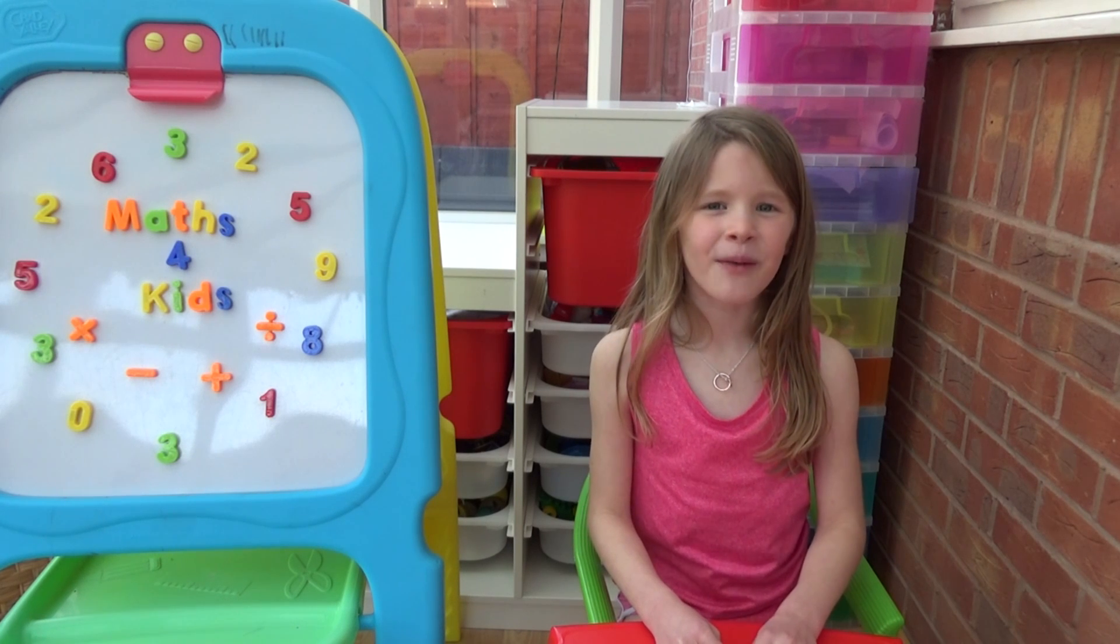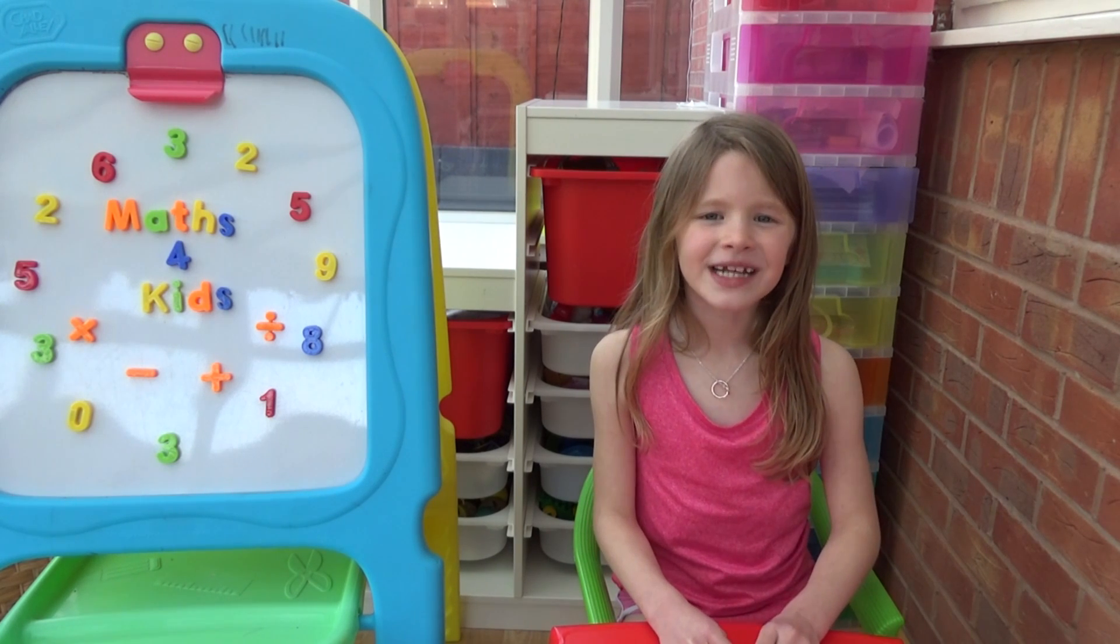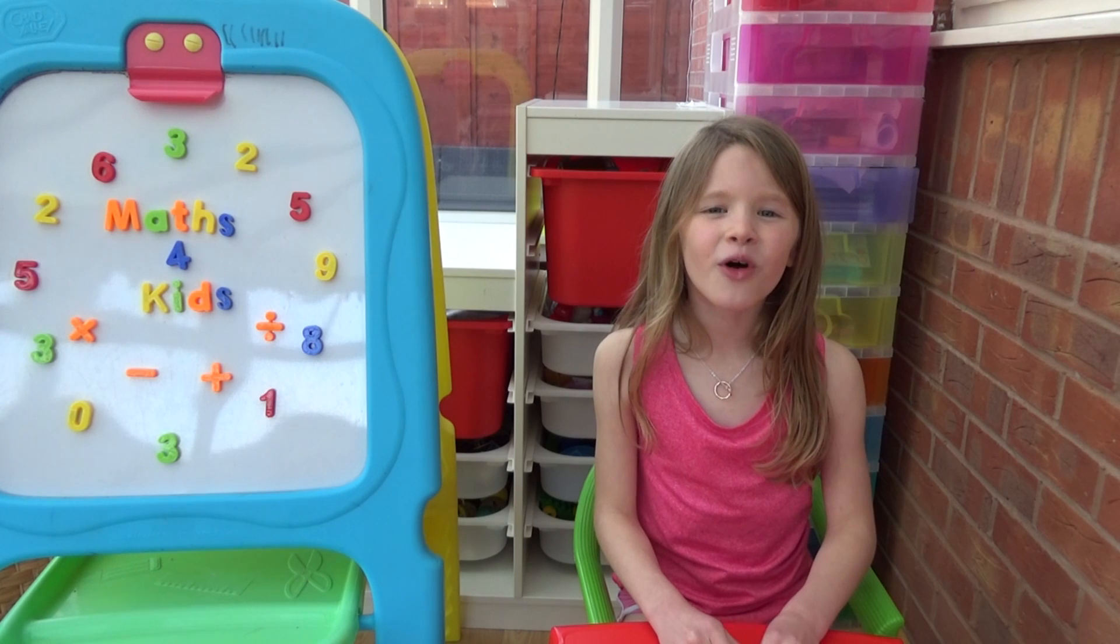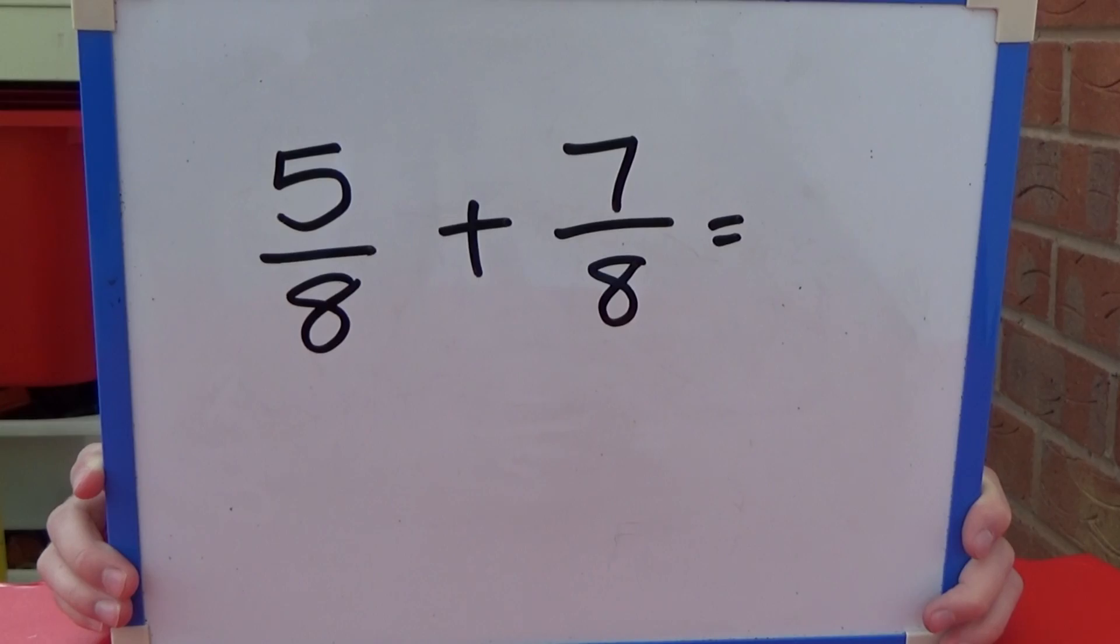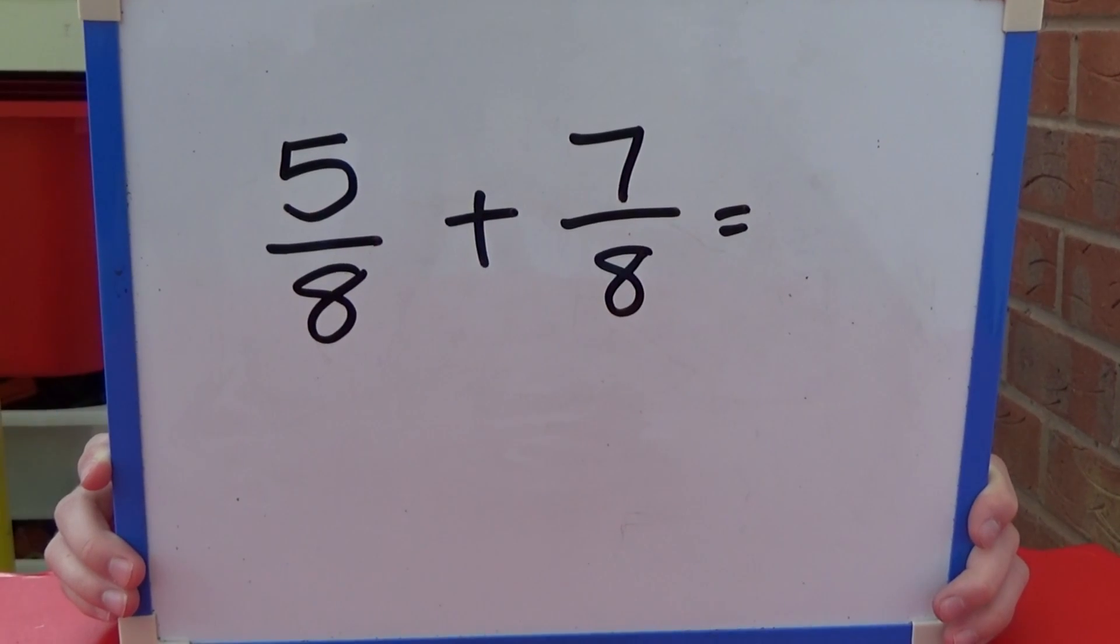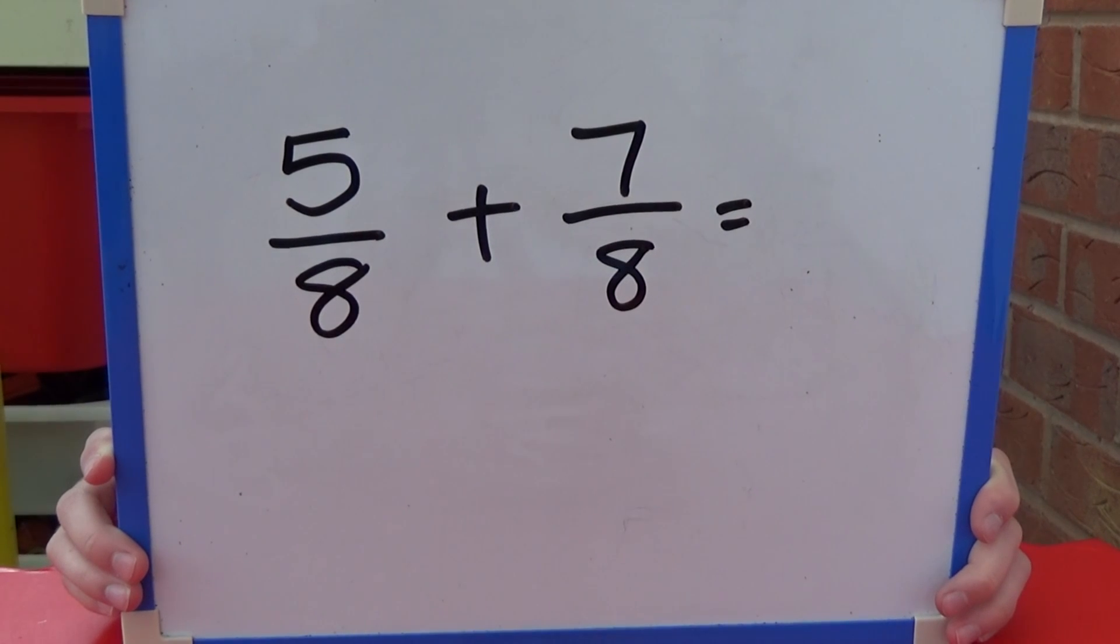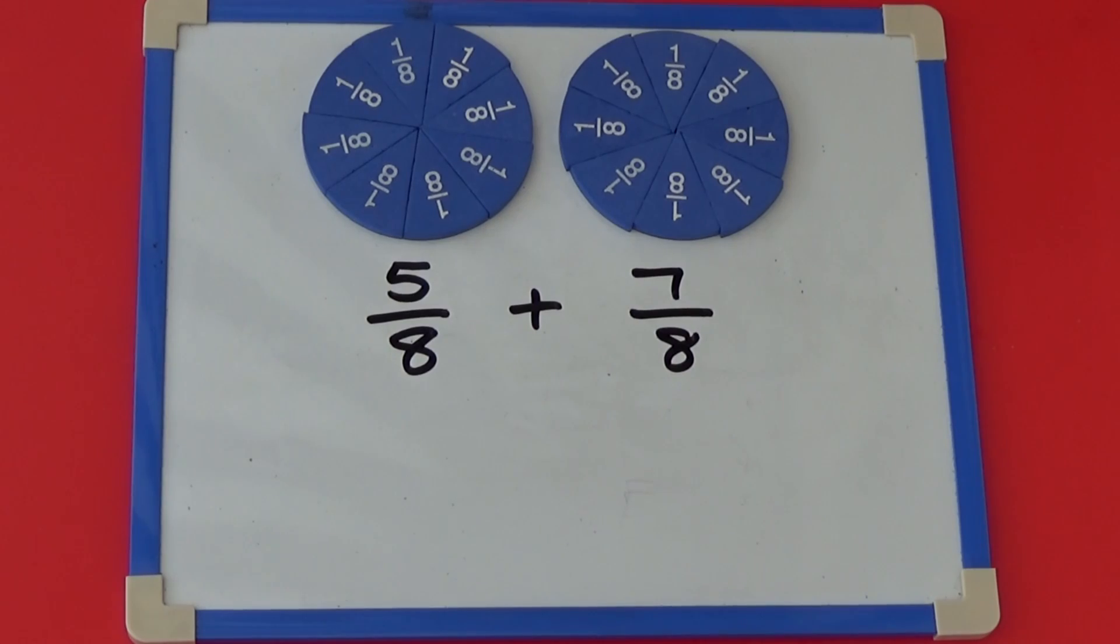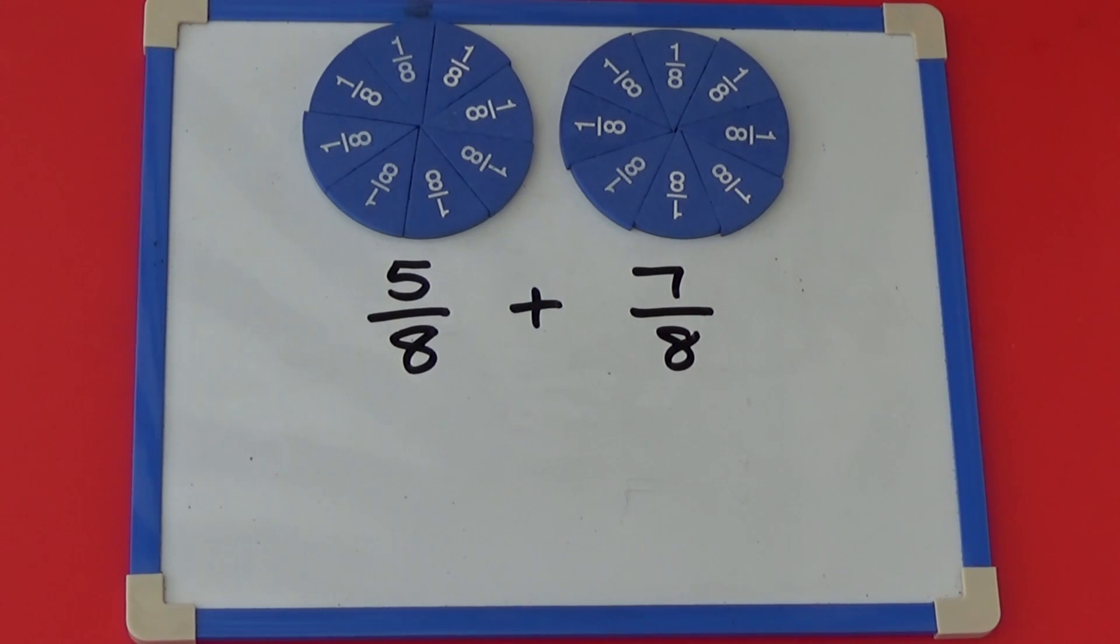This time we're going to look at what happens when the two fractions added together make more than one whole. This time we're going to add together five eighths and seven eighths. As the denominator is eight, we're going to use our fraction circles, which are split into eighths or eight equal parts.